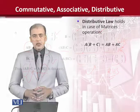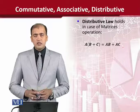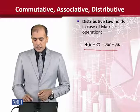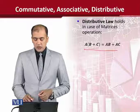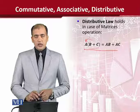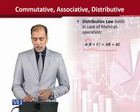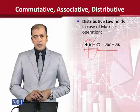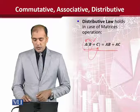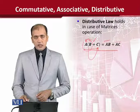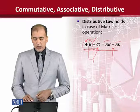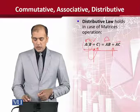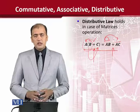Now we are talking about the third category of laws, known as the distributive law. Looking at the standard form: if we multiply A by the sum (B plus C), it means we multiply A by B first and A by C separately, and then add the results. On the other side, we can also distribute from the right. This distribution over addition is what we call the distributive law.